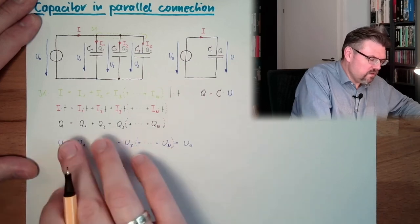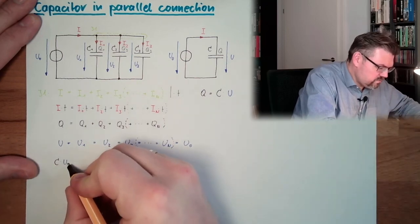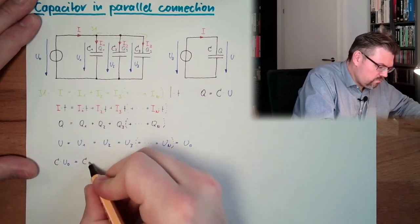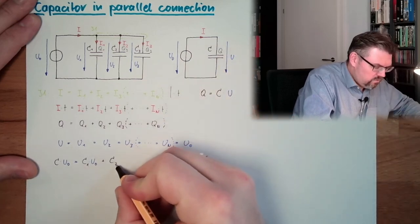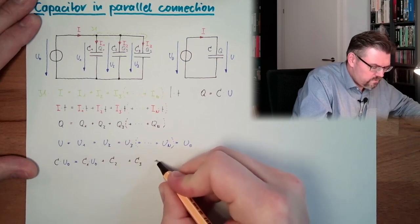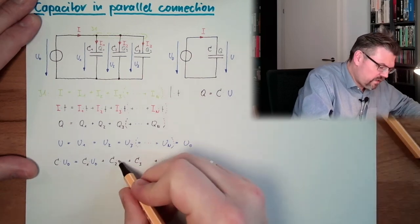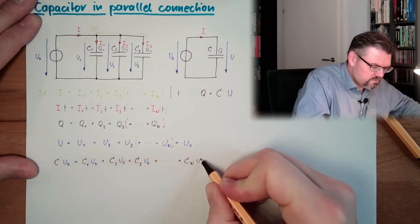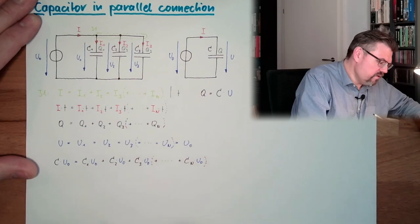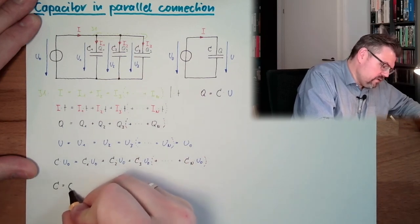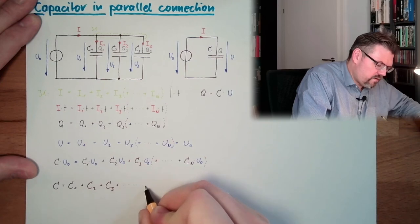And now, I put this in. Instead of Q, I'm writing C multiplied by U0 equals C1 multiplied by U0, C2 equals C3. Extrapolation. Cn. And always, I have this multiplied by U0 inside. Here we again have the extrapolation.